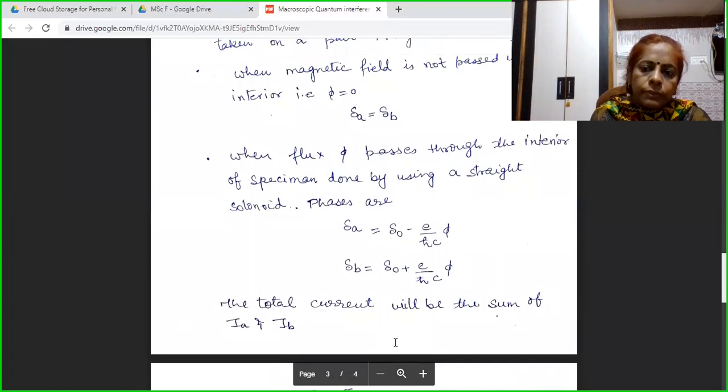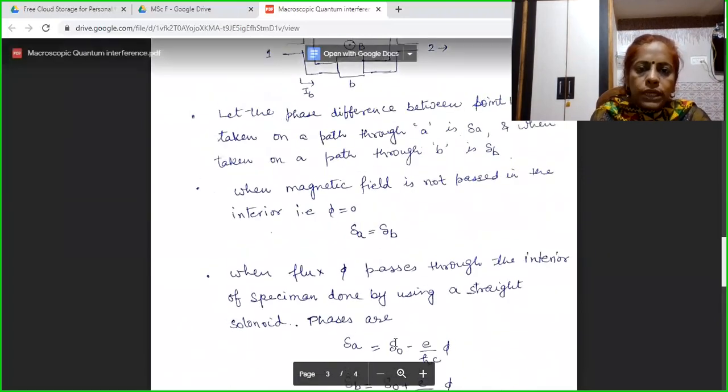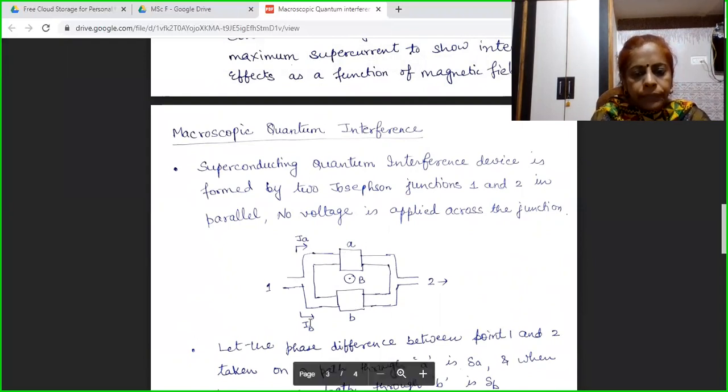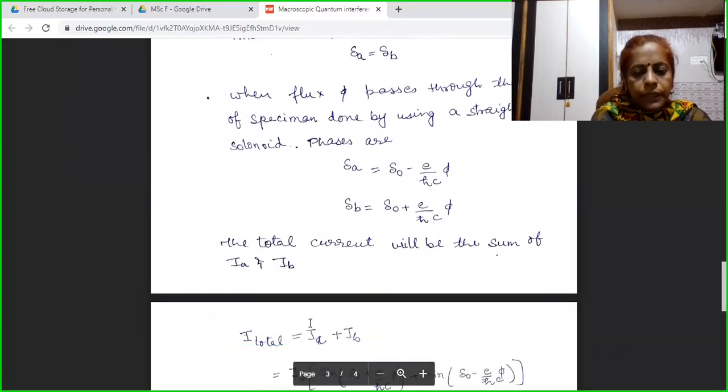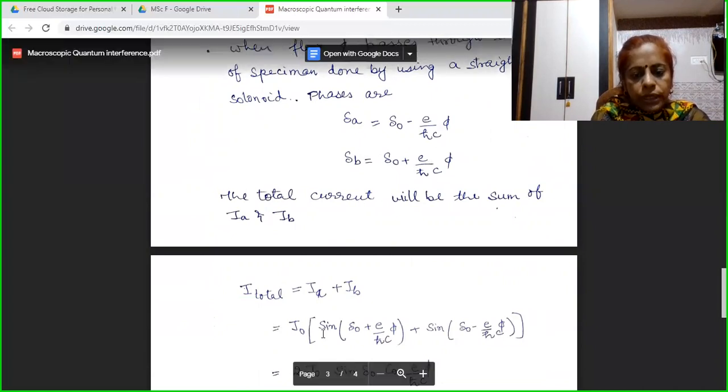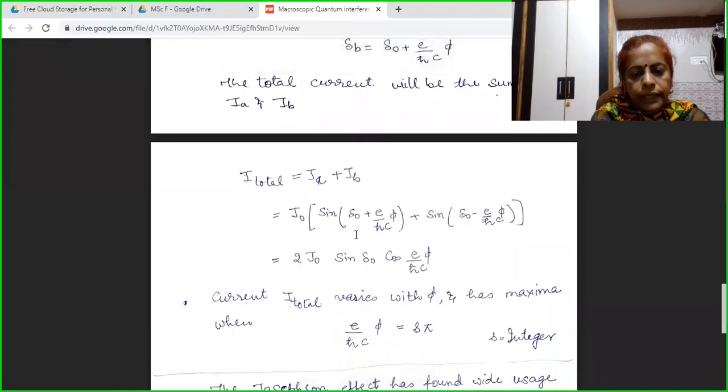In the output we will have a current through both the junctions, current through A junction denoted by Ia and current through B junction denoted by Ib. The total output current will be Ja plus Jb. Since we know the phase of A and B junction, we can write J0 sin delta 0 plus E phi upon h cross C plus sin delta 0 minus E phi upon h cross C. Solving this, we get 2 J0 sin delta 0 cos E phi upon h cross C. This is the total output current.